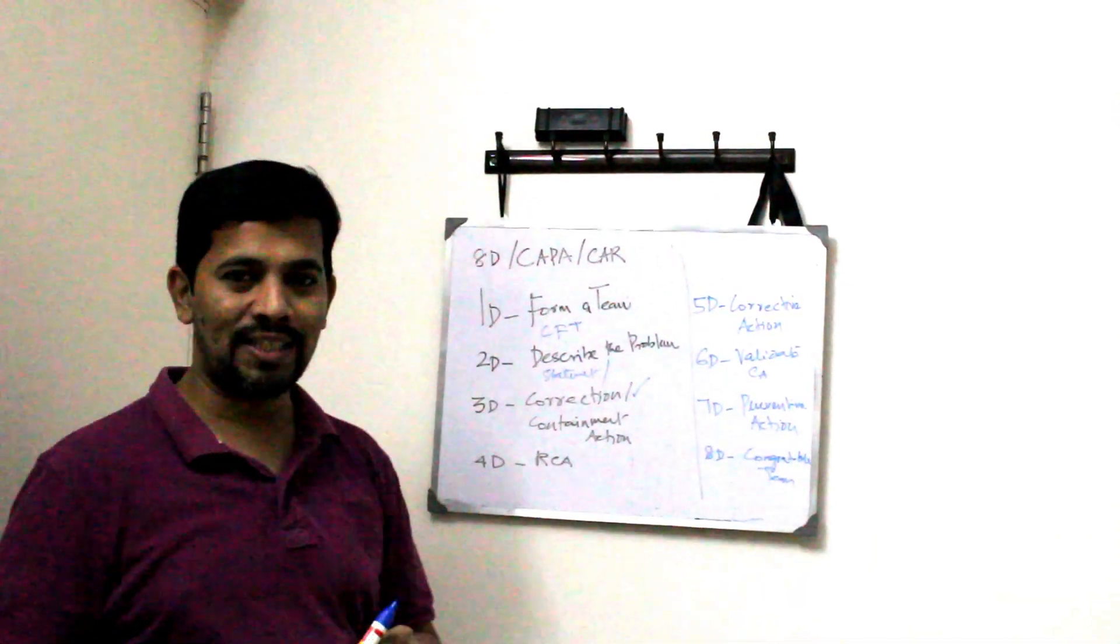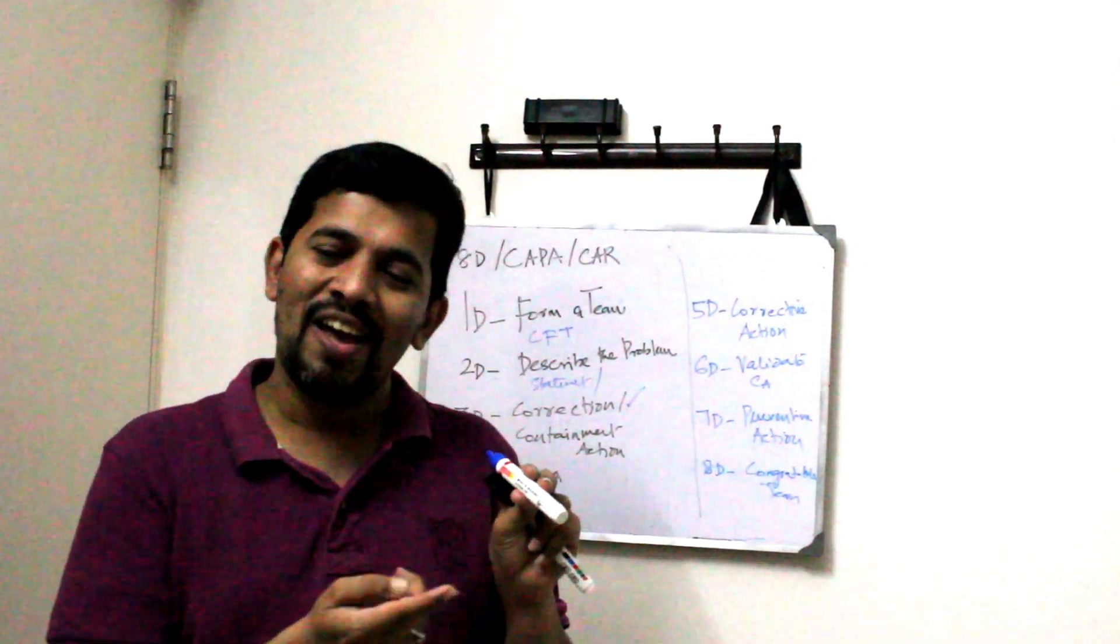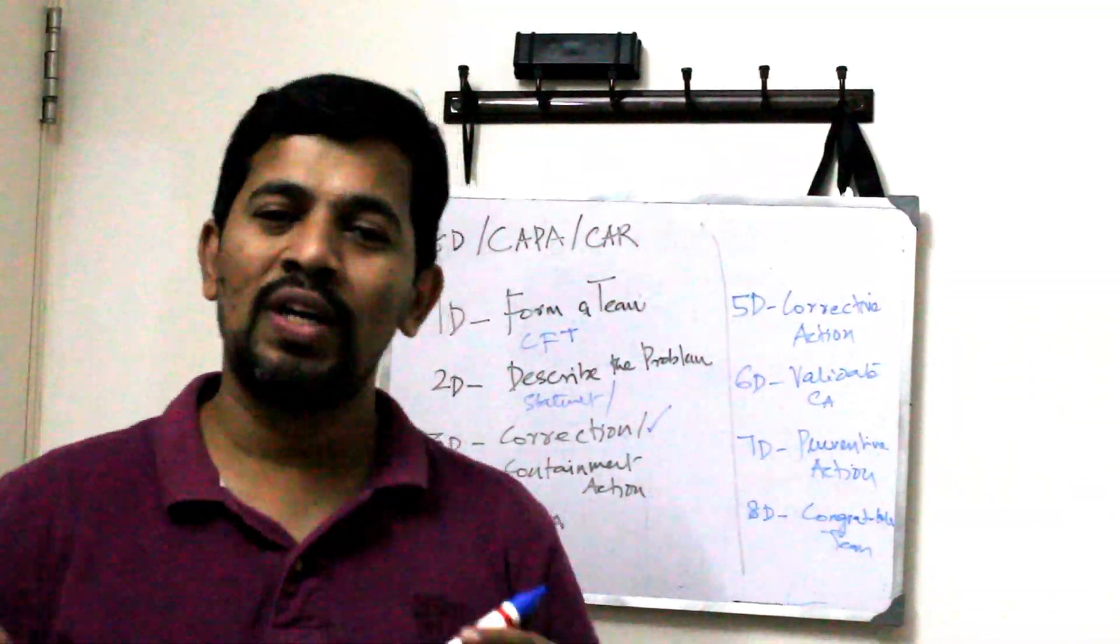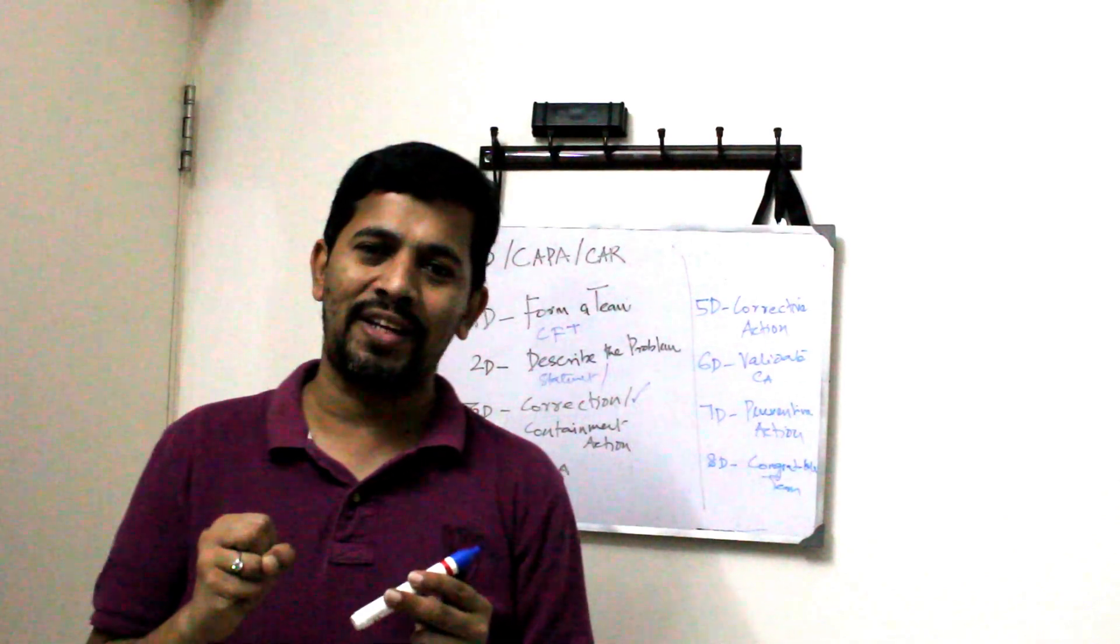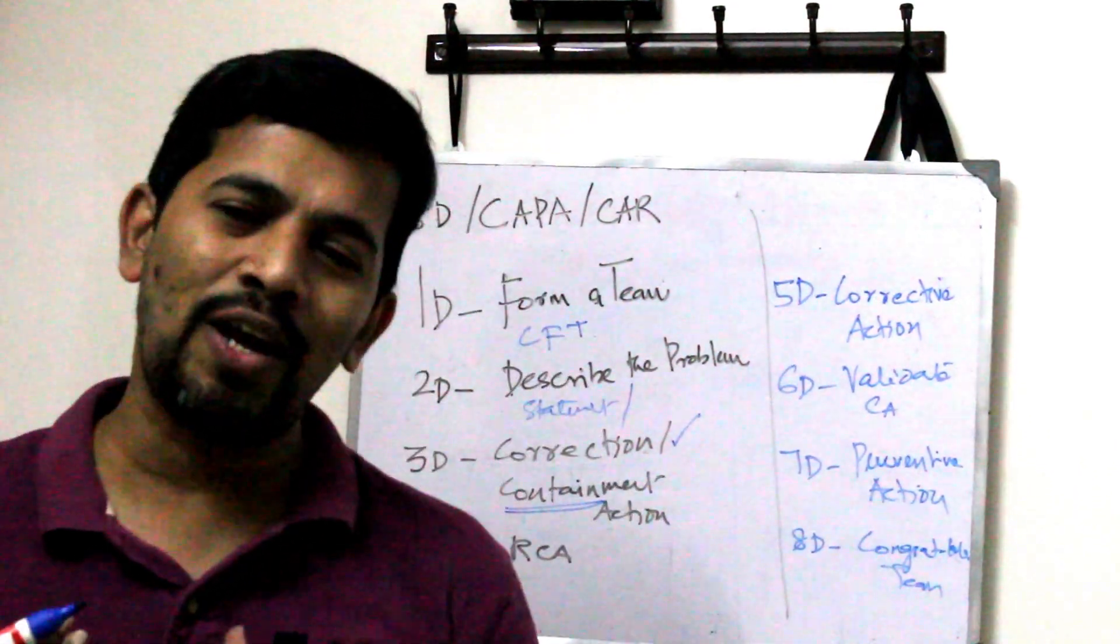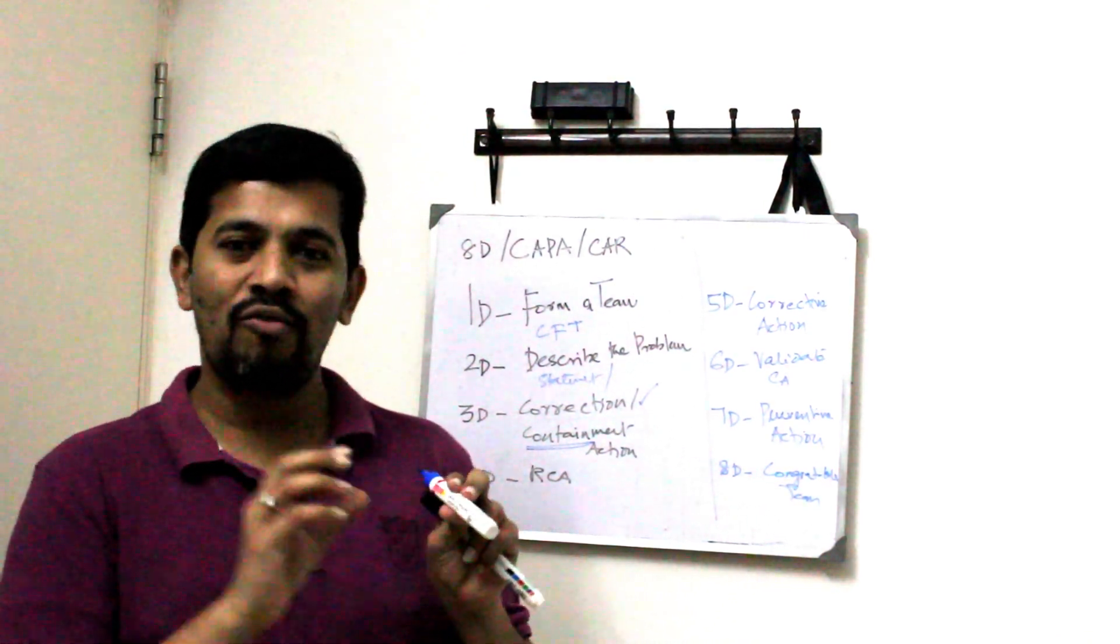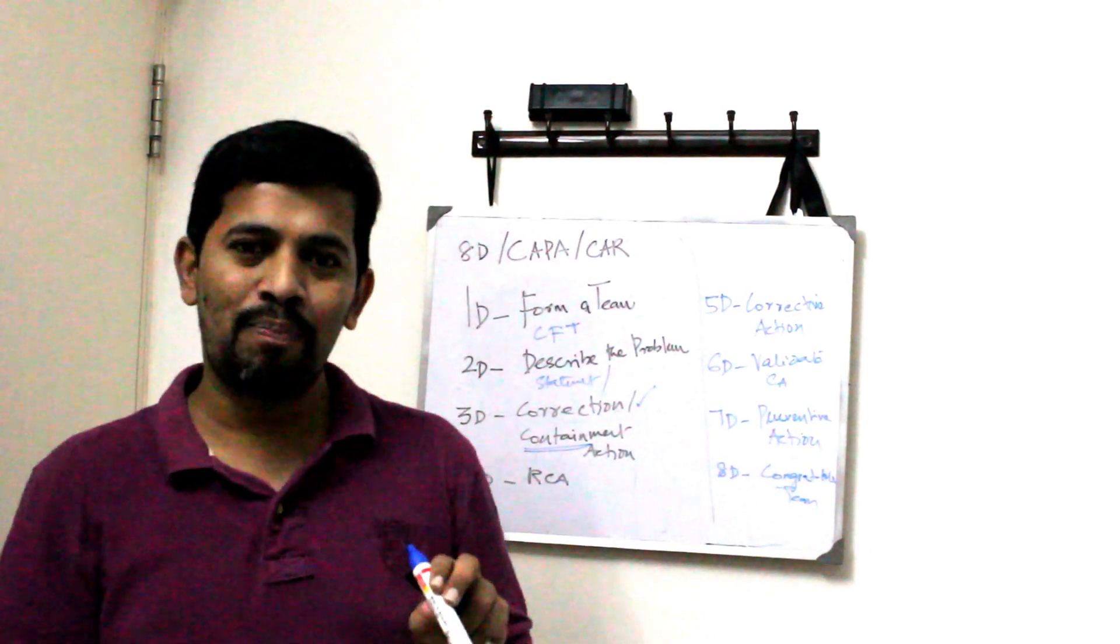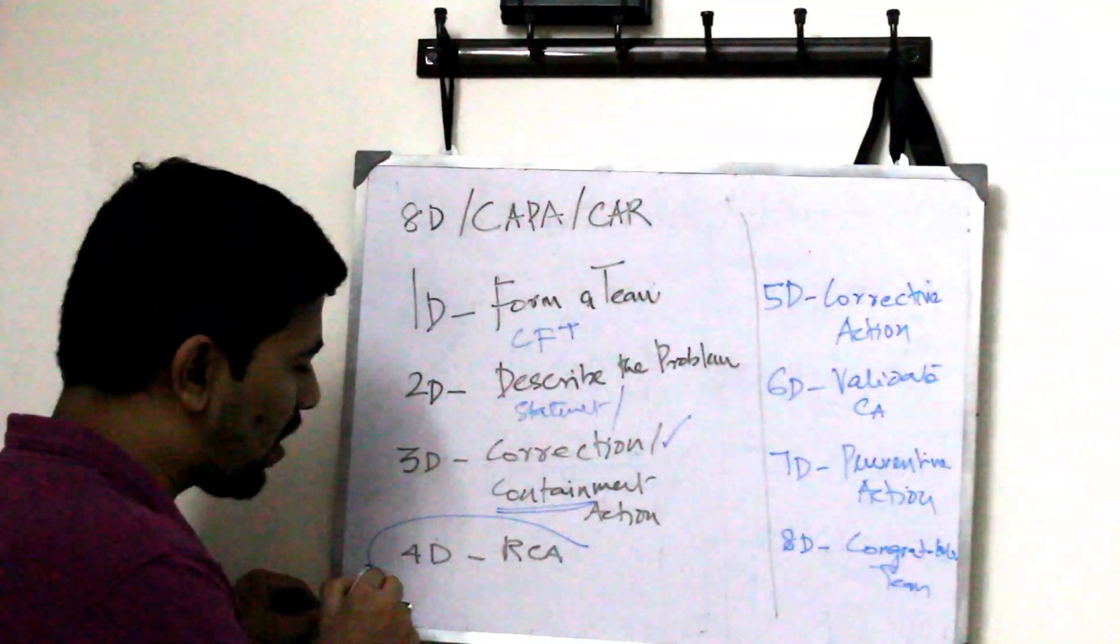And then you have called containment action. Containment action meaning like elsewhere the same problem is there or not. I need to check. If the problem exists what I need to do. For example elsewhere the same problem was there. Let's say in the finished good. The same problem was there. Maybe in the production line. I have to take down all the quantities. That's what containment action contain. How much does the stock contain. I have to take down all and then write down the numbers. For example let's say the same problem. We had 25 markers contain the same problem out of thousand. That means those things we have to quarantine.